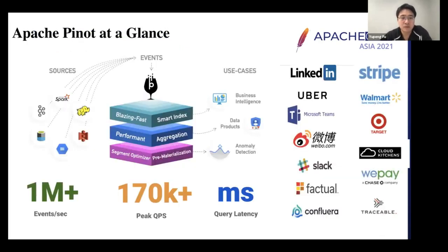Originally, Pinot was developed at LinkedIn and contributed to Apache. From there, it has seen really good adoption across the industry — not only at Uber, but also at multiple big brand names like Stripe and Walmart. Pinot has really good scaling numbers, as you can see on this slide from these companies.